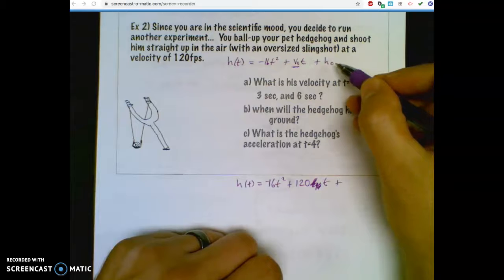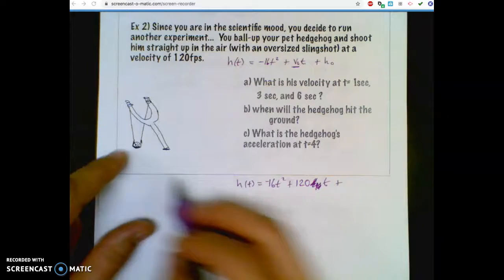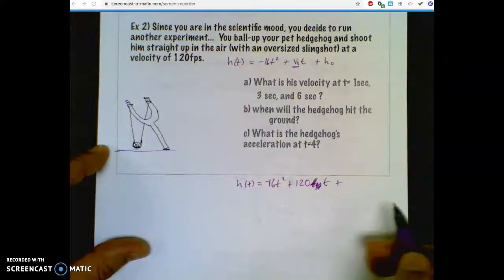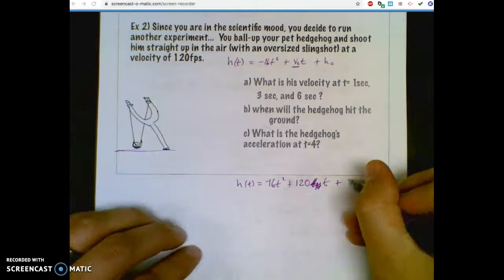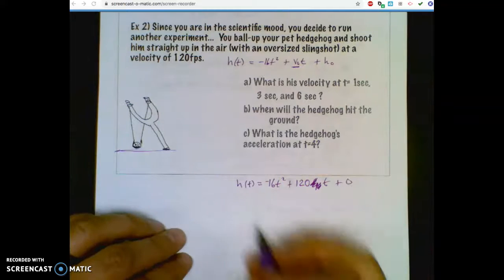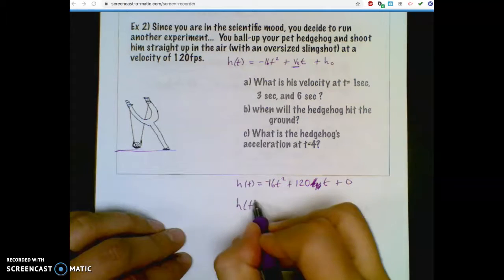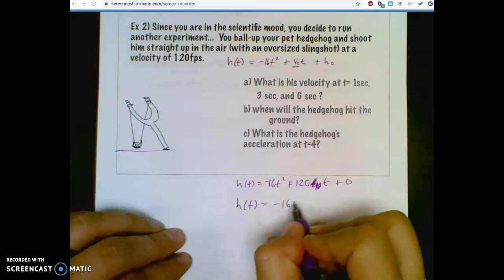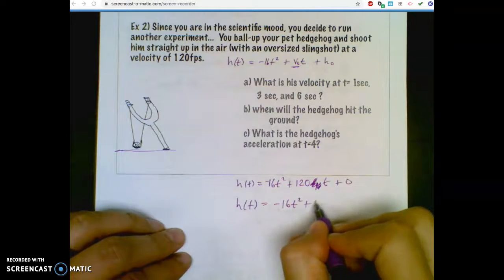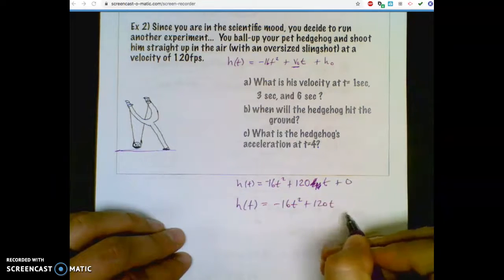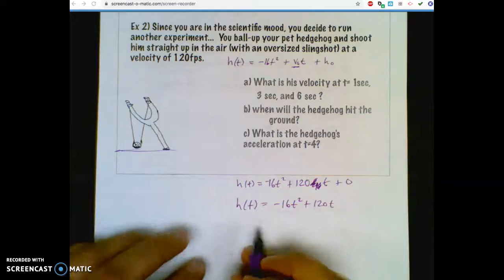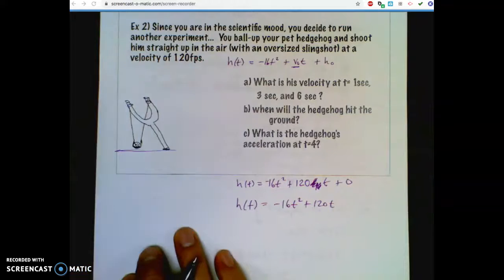Plus your starting height, and your starting height, it looks like it's at ground level. Okay, we're going to go ahead and call that even and call it ground level. So a little nicer version without all the scribbles and without a plus zero: negative 16t squared plus 120t. That's our equation for the height of this hedgehog at any time.